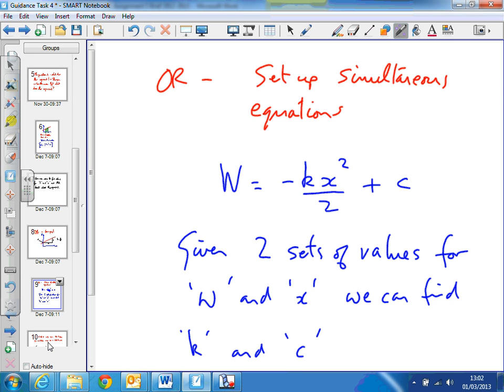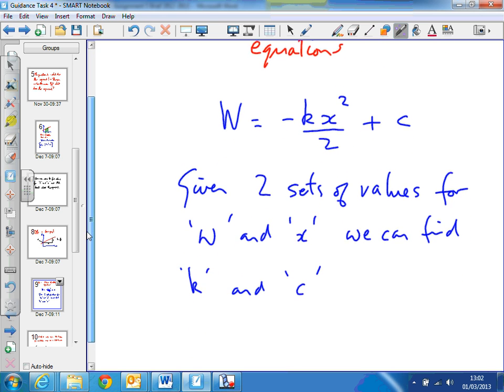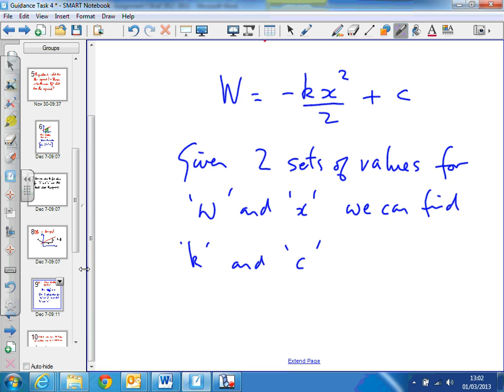Or as I said, we set up two simultaneous equations to solve it, and that would be used if we have two sets of values for the work done and the distance travelled. We've got two equations, two unknowns, and we can then solve it.